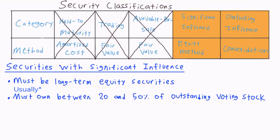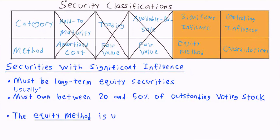Finally, securities in this category are not reported at amortized cost or fair value like other securities that we have looked at, but rather are accounted for according to a method of reporting called the equity method, which we will discuss in more detail when we get to the journal entries.